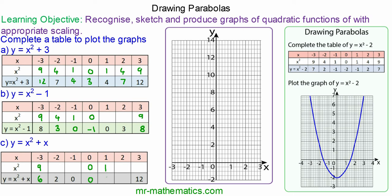2 squared is 4 and 2 is 6. When x is 3, y is 12. Plotting these points at negative 3 and 6, negative 2 and 2, negative 1 and 0, and 0 and 0.